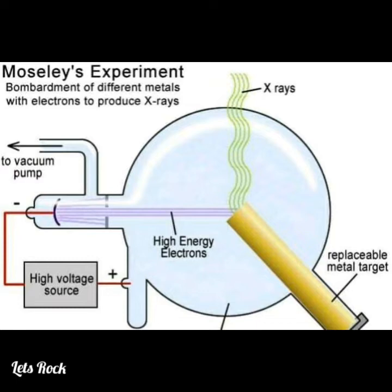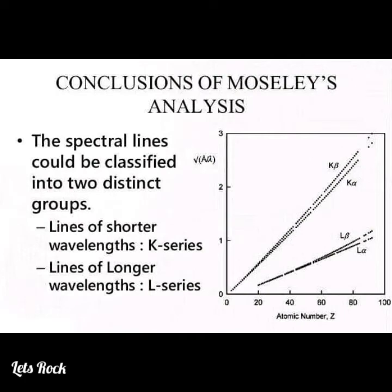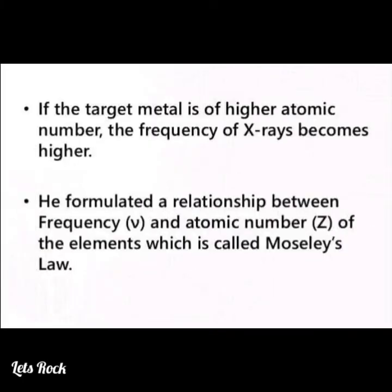By bombarding different metals with electrons to produce X-rays, Moseley proved that the frequencies of X-rays are directly proportional to the number of protons in the nucleus. He defined the number of protons in the nucleus as the atomic number. The spectral lines could be classified into two distinct groups: lines of shorter wavelengths (K-series) and lines of longer wavelengths (L-series). If the target metal is of higher atomic number, the frequency of X-rays becomes higher.